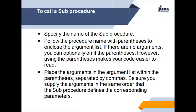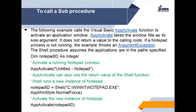To call a sub procedure, specify the name of the sub procedure. Follow the procedure name with parentheses to enclose the argument list. If there are no arguments, you can optionally omit the parentheses; however, using parentheses makes your code easier to read. Place the argument in the argument list within the parentheses, separated by commas. Be sure you supply the arguments in the same order that the sub procedure defines the corresponding parameters. The following example calls the Visual Basic AppActivate function to activate an application window.